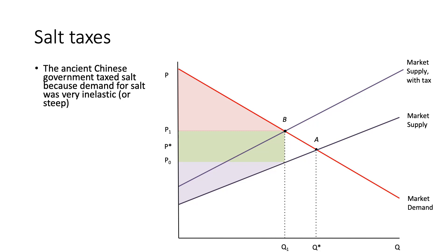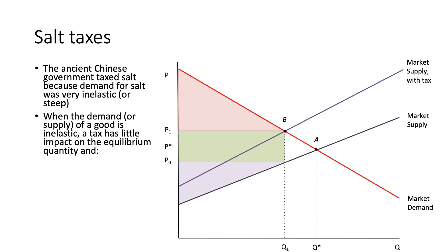In a historical context, the ancient Chinese government taxed salt because demand was very inelastic — individuals required it to preserve their food. When demand for a good is very inelastic, the tax has very little impact on the equilibrium quantity. Returning to the insulin example, changes in price won't significantly alter the quantity purchased, so different governments or companies can take advantage of this. When demand is more inelastic, the tax increases revenue raised and decreases the amount of deadweight loss, maintaining much of the efficiency.